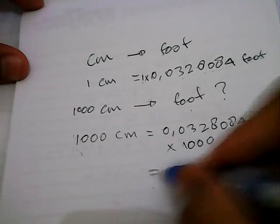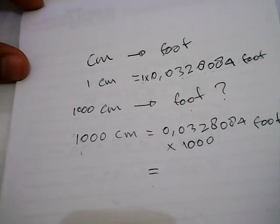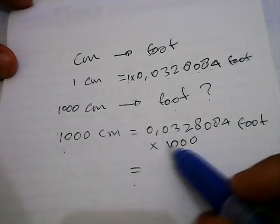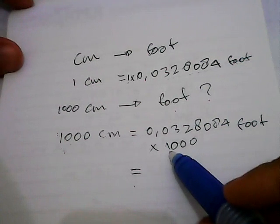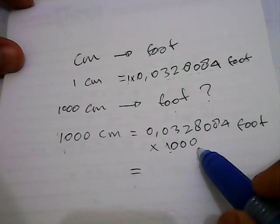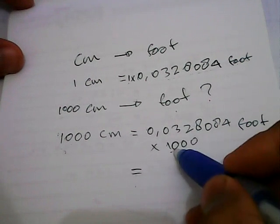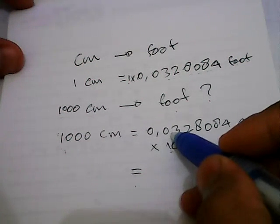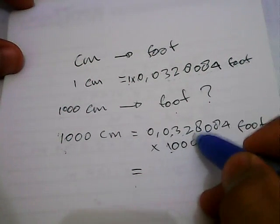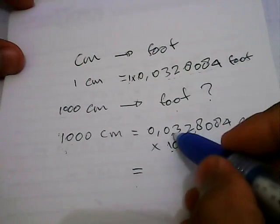Let's multiply, let's just multiply the number. We have 1,000. So, we need to move 1, 2, 3 zeros. We need to move the comma 1, 2, 3. That's it.